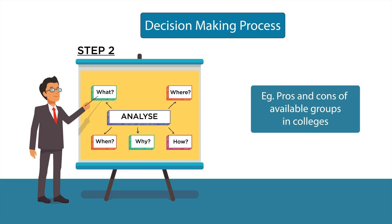Let us move to step 2 — that is to analyze the problem. To analyze the problem means to understand the advantages and disadvantages of selecting the groups and colleges. For example, what is the quality of education offered, where is it located, who will help me, how far is it, etc.